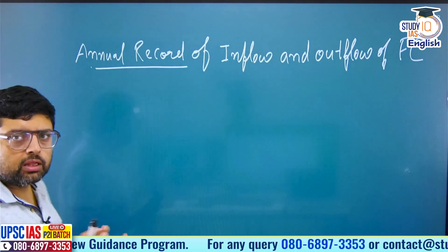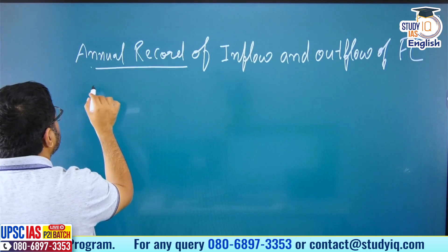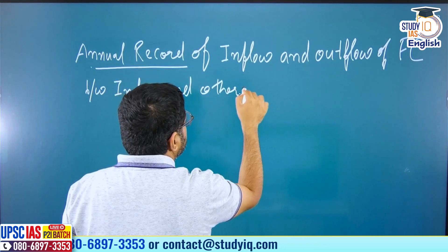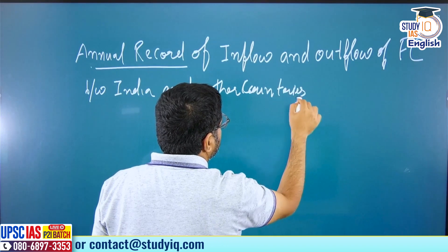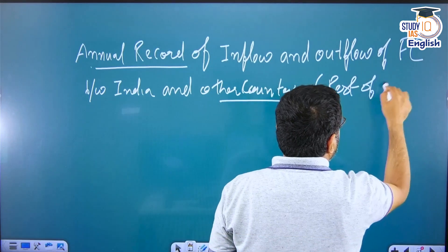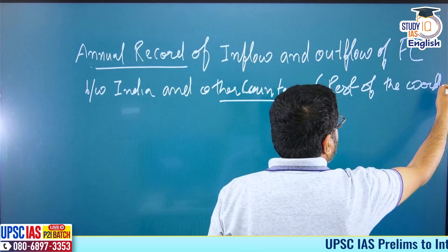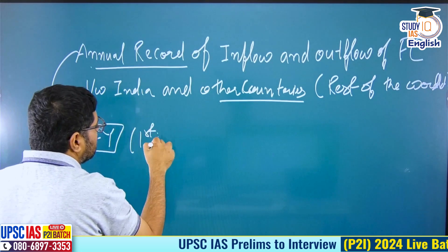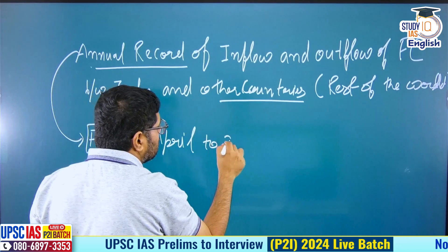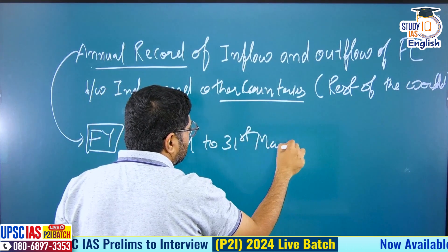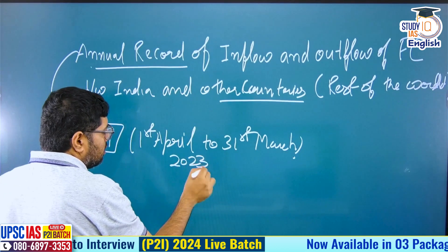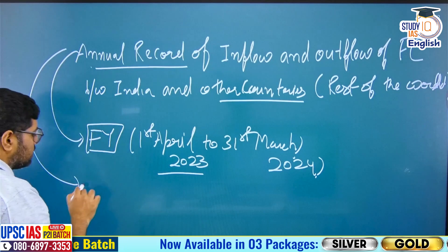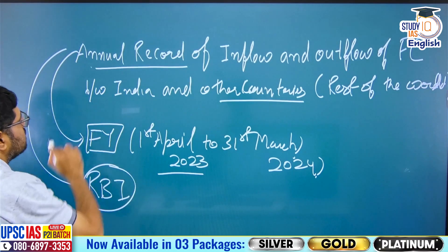This meaning is in the context of India only — inflow and outflow of foreign currency between India and other countries, which we can say rest of the world. This annual record means we are maintaining it for a financial year, which starts from 1st April and goes to 31st March of the next year. For example, this year it is 1st April 2023 and it will end on 31st March 2024. This annual record is maintained by the Reserve Bank of India.